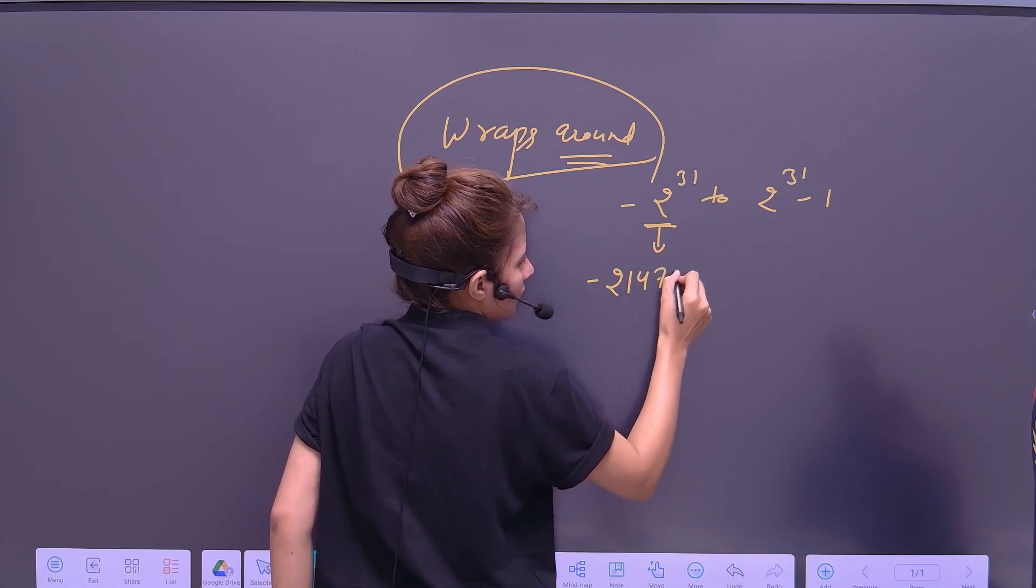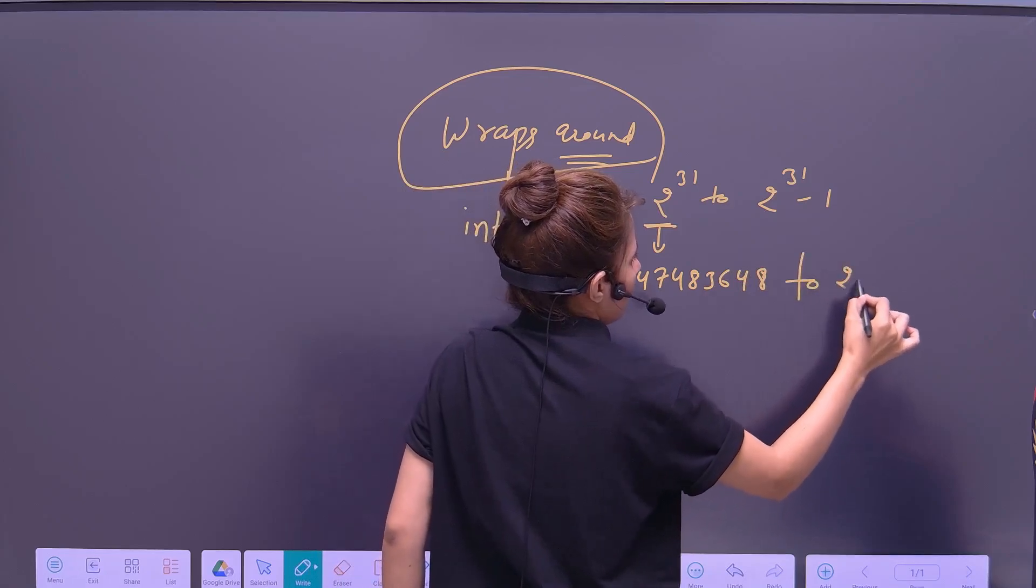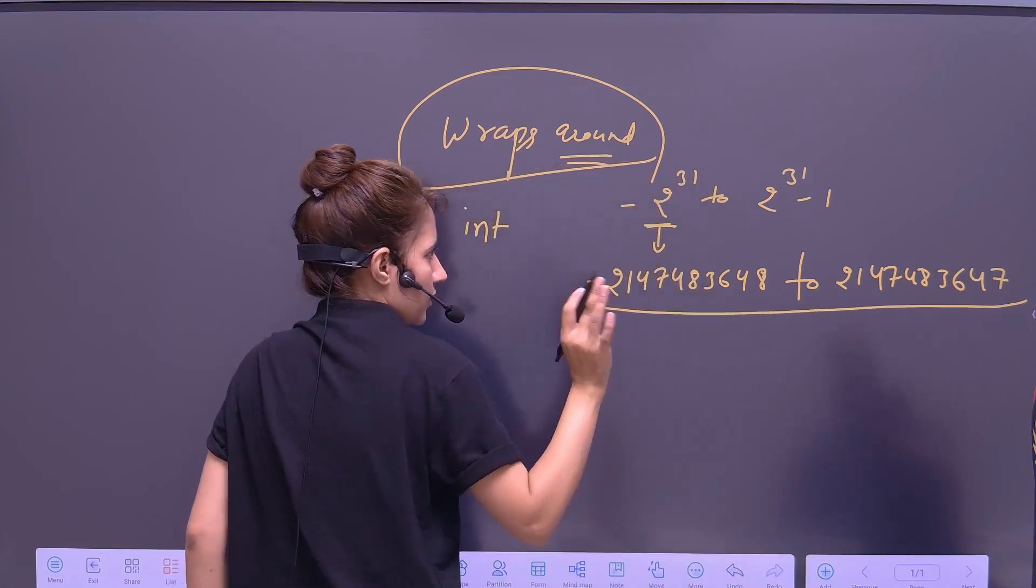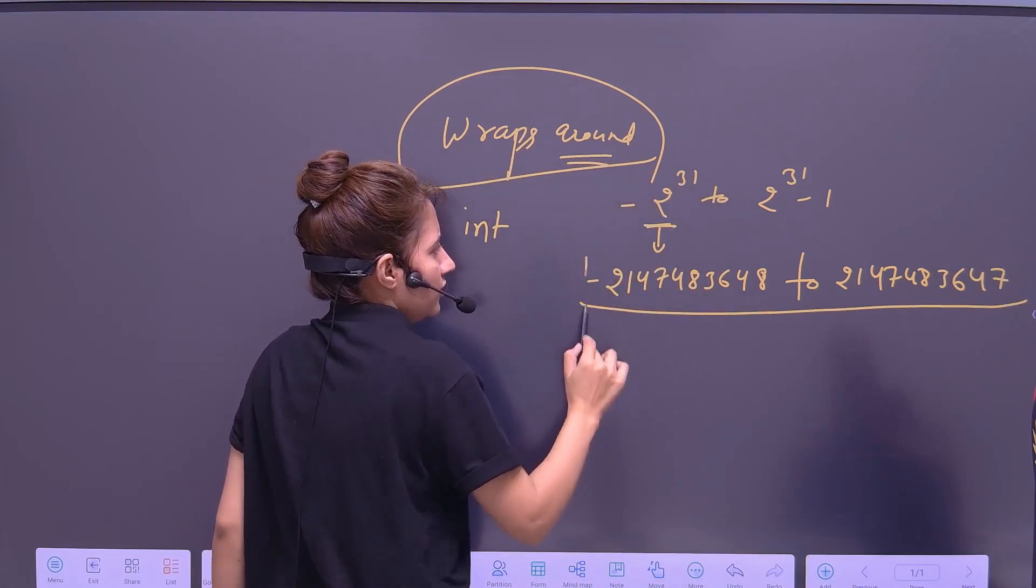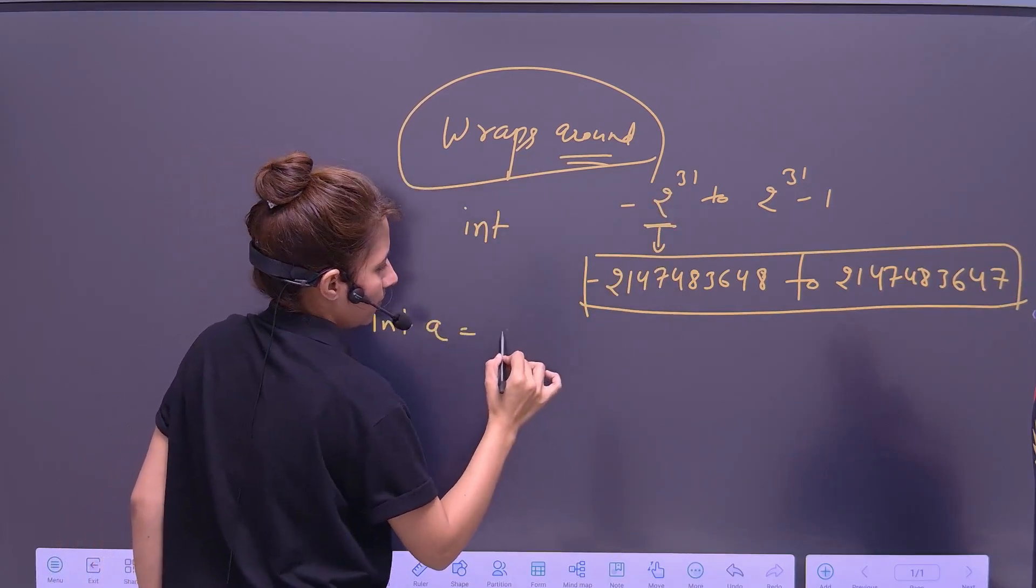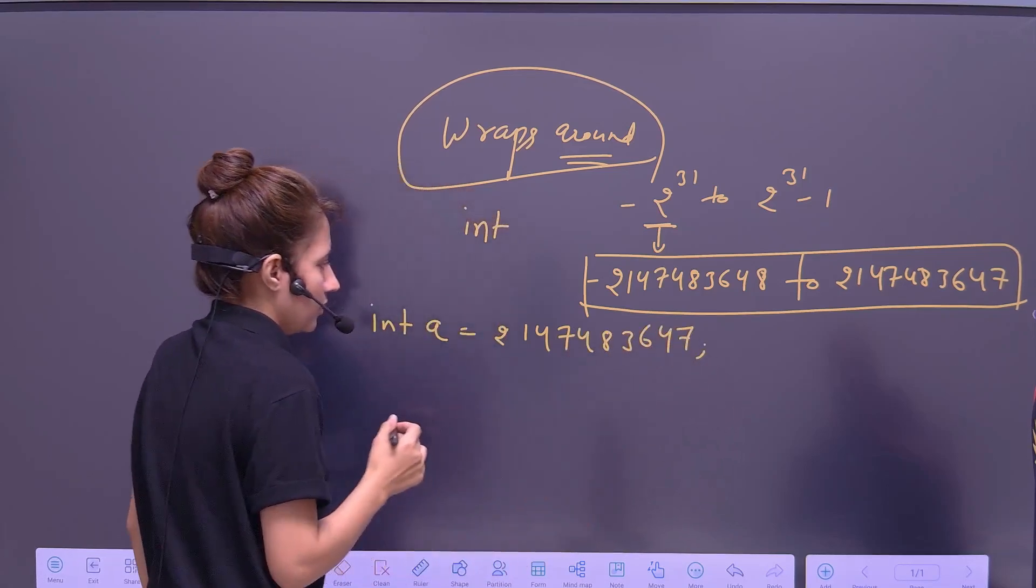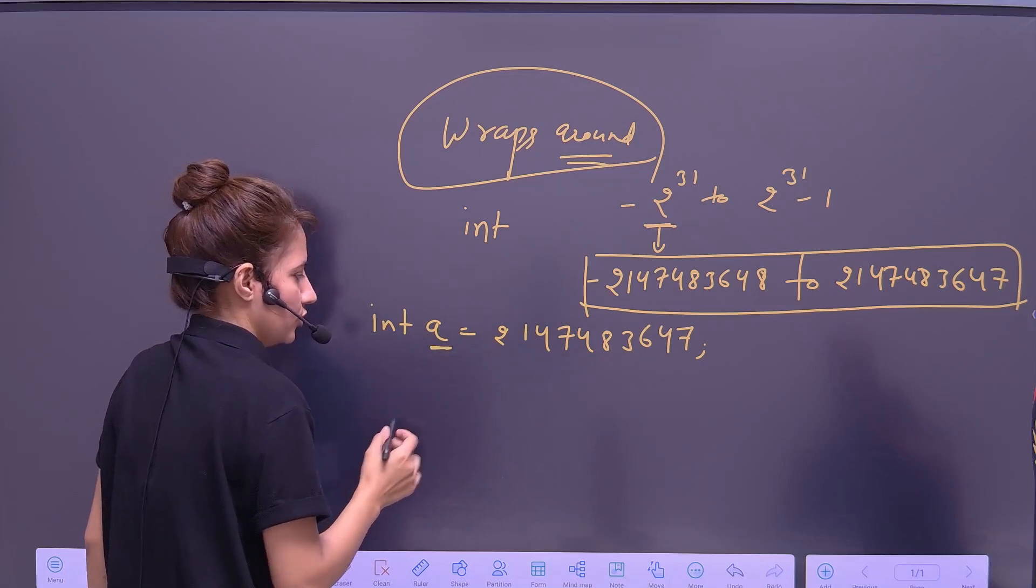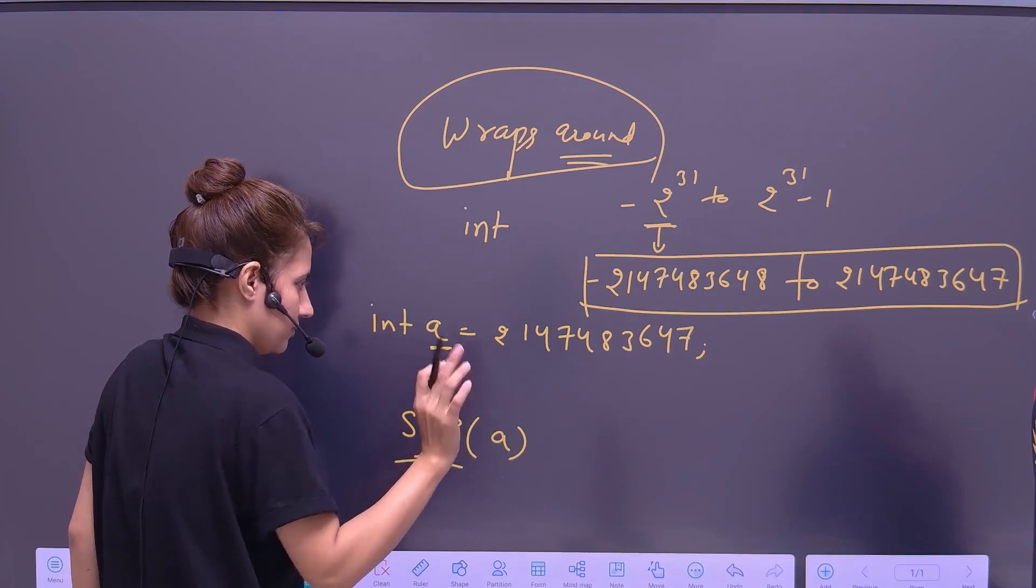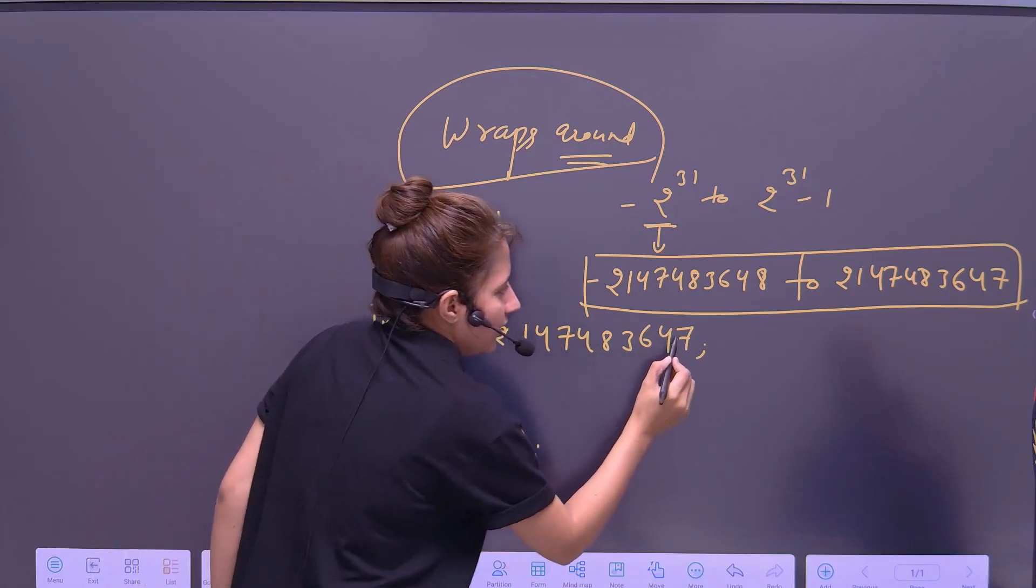2 raised to power 31 minus 1. So if you calculate this, evaluate this, it will be minus 2, 1, 4, 7, 4, 8, 3, 6, 4, 8 to plus 2, 1, 4, 7, 4, 8, 3, 6, 4, 7. I hope the range is correct. You can check out. So this is the range of int. And if I print something like this, int a equals 2, 1, 4, 7, 4, 8, 3, 6, 4, 7, and if I print this a using system.out.println, I am not writing it in complete form, this is the shortcut, small form. So it will print this value. Work fine.